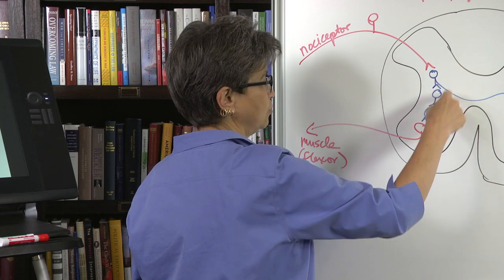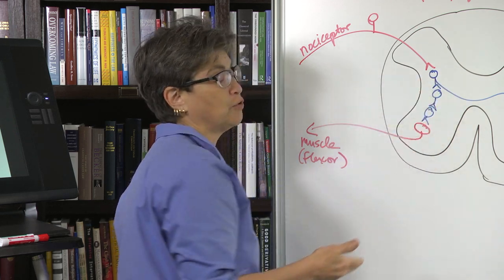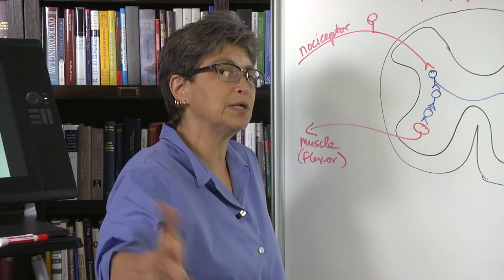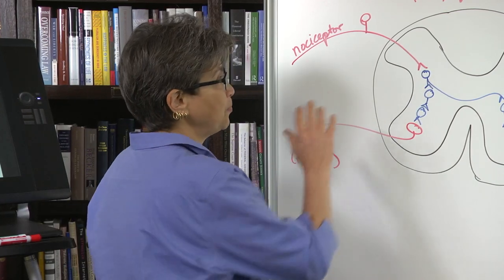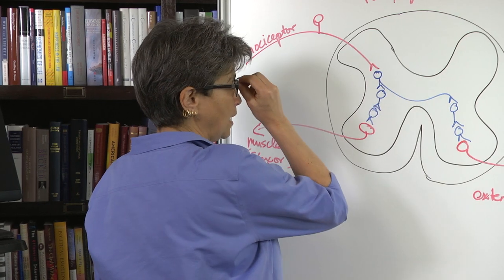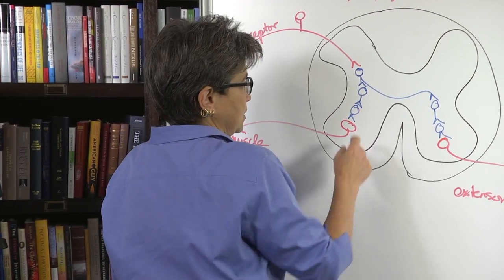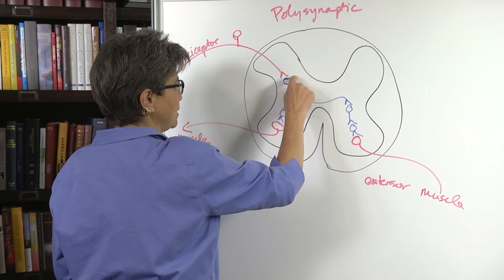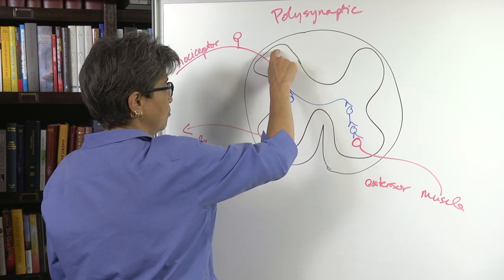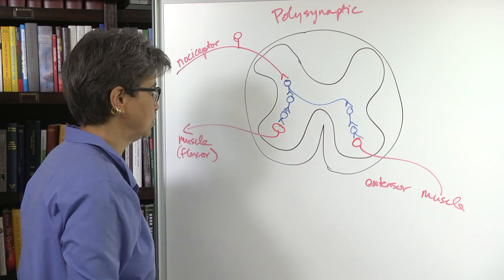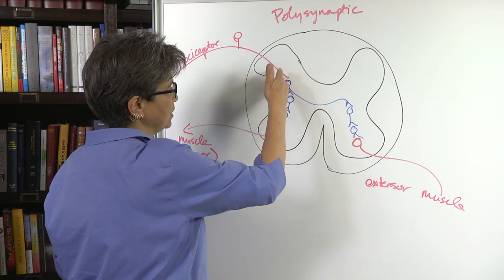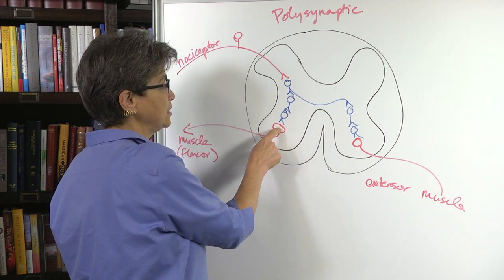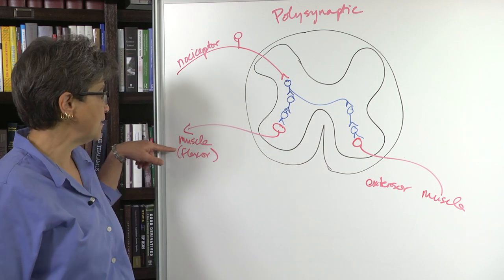It synapses on a central neuron which goes through a number of neurons. The fact of the matter is we don't know exactly how many neurons it goes through, but this is a polysynaptic—there are more than one synapse, and in fact it's not disynaptic, it's more than two synapses. It's some number of synapses that takes this information from the nociceptor, processes it probably in the dorsal horn, possibly in the superficial dorsal horn, and then the information gets passed along through a variety of different cells until it finally reaches a motor neuron that excites a flexor.